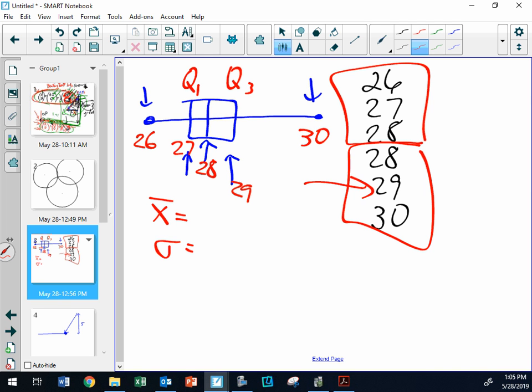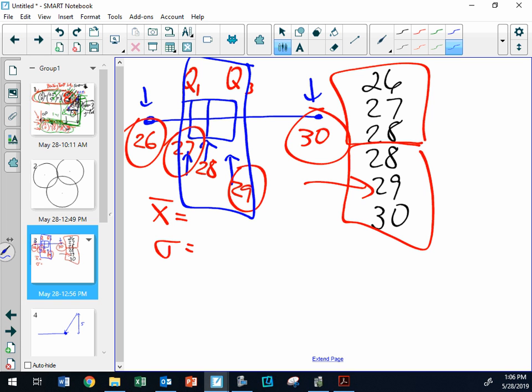All right. So here's a typical test question. What is the interquartile range compared to the range? Figure out what the range is, figure out what the interquartile range is. So you should have said that the range was 30 minus 26. The range was 4. The interquartile range, what minus what? 29 minus 27 is 2.